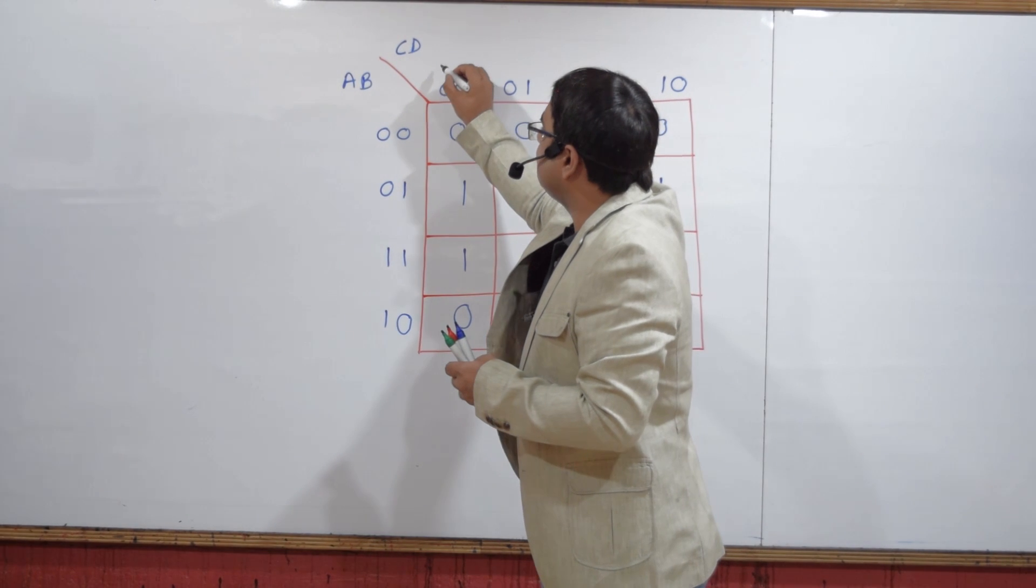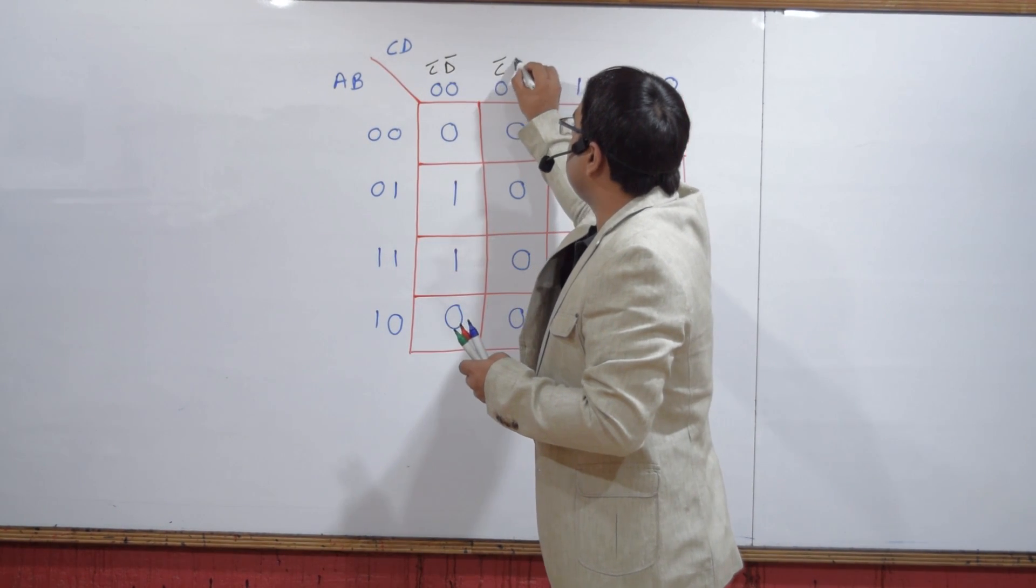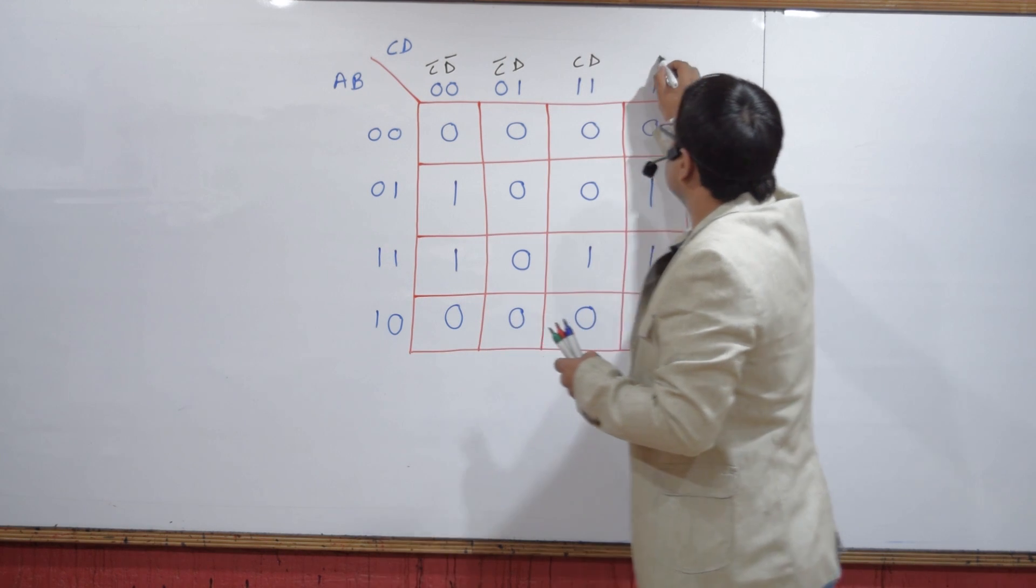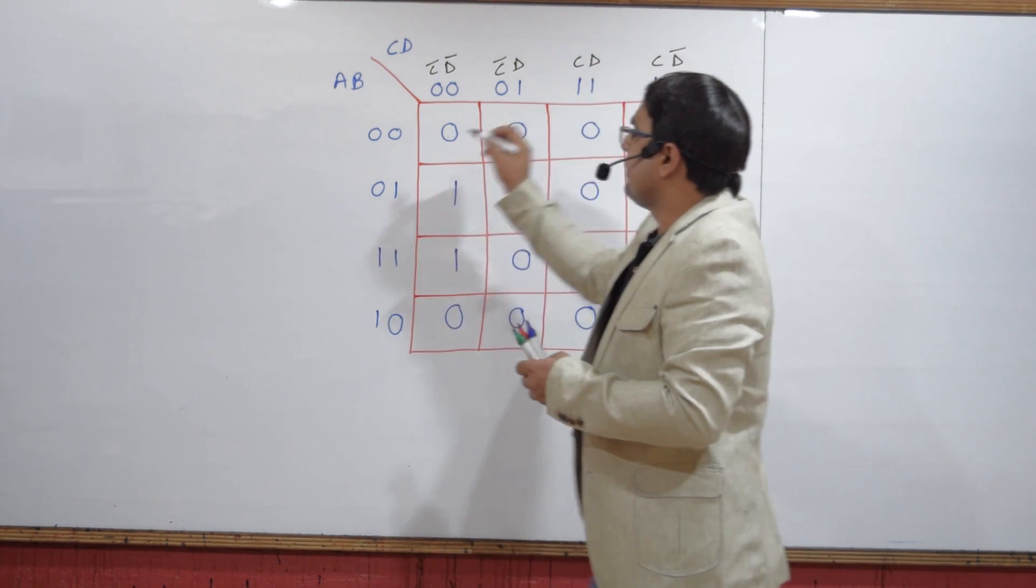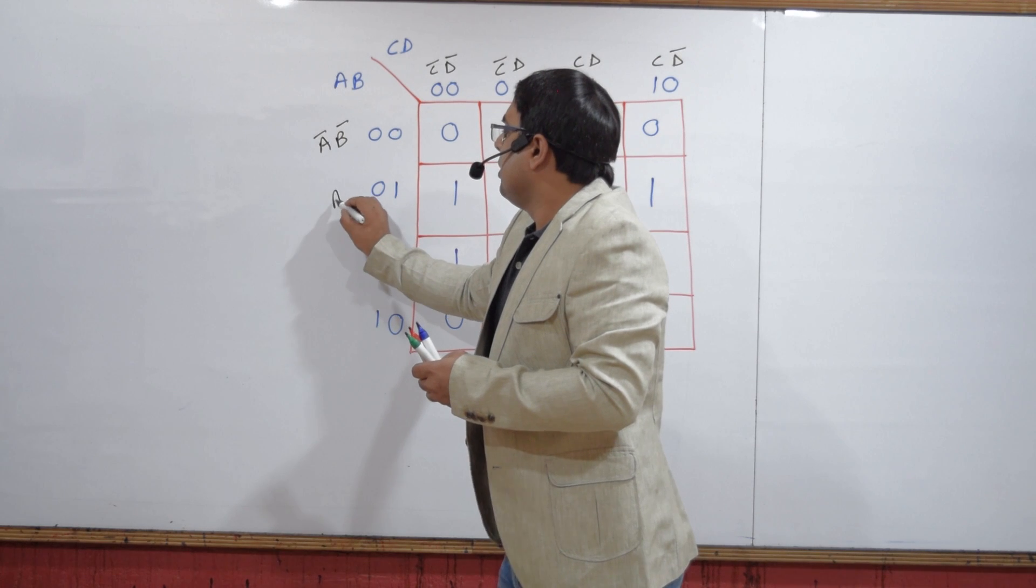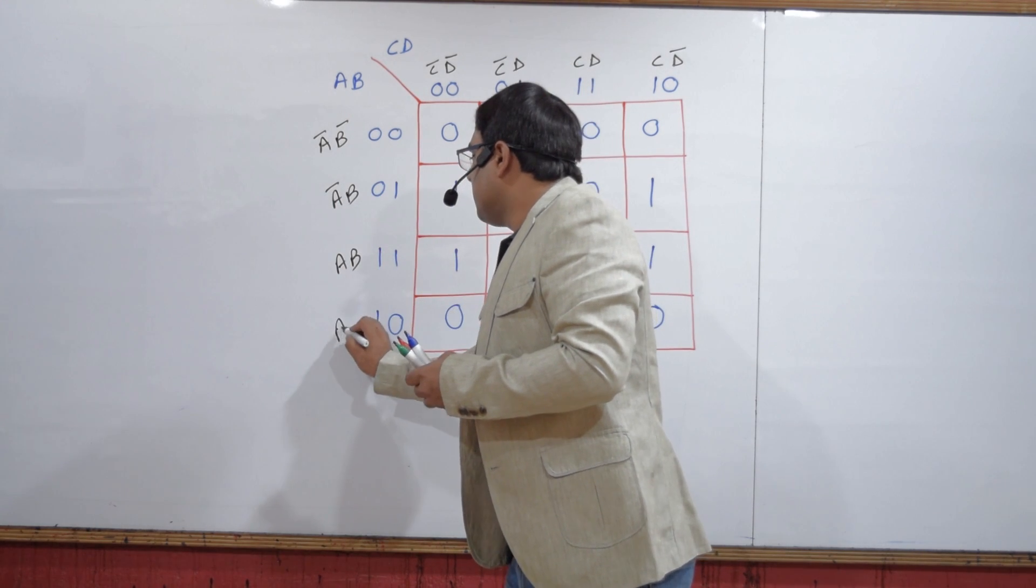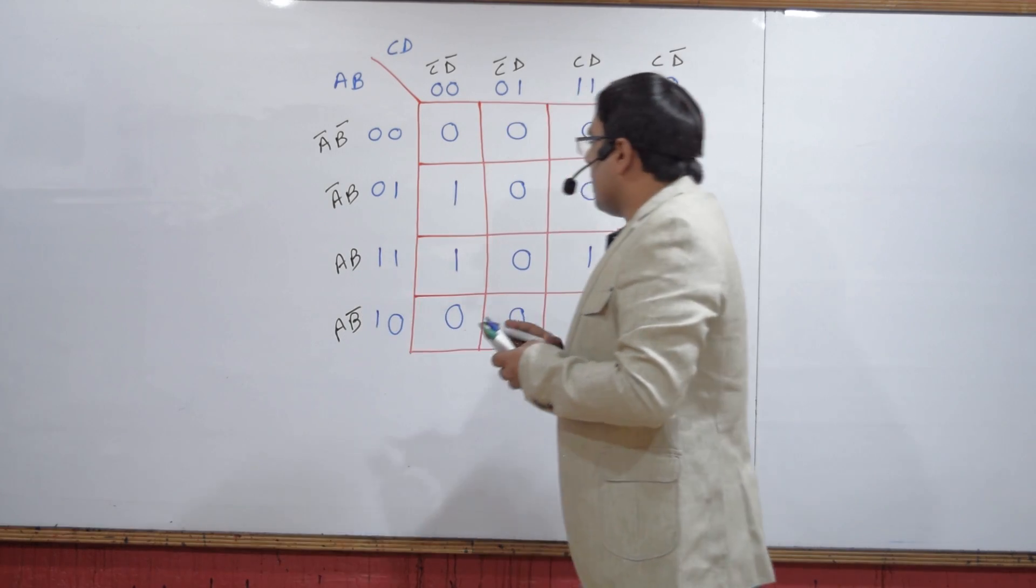we can mark the variables as C complement D complement, C complement D, CD, C D complement. This will become A complement B complement, A complement B, AB, A B complement. Then we have to search for all the min terms and possible combinations.